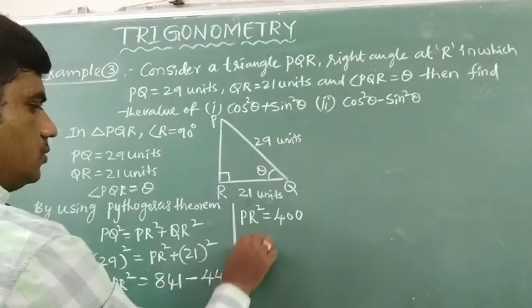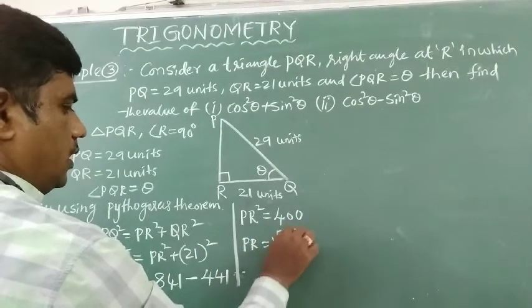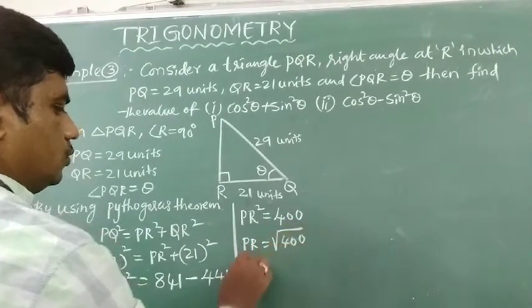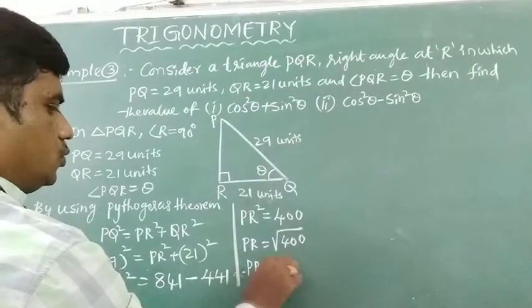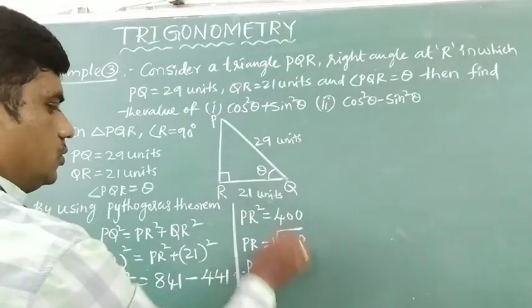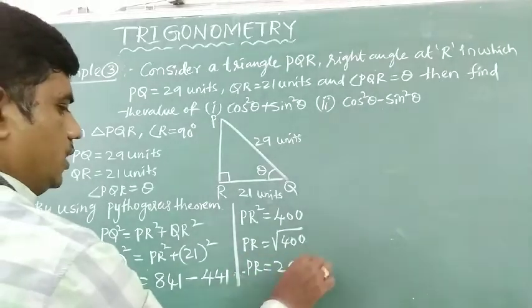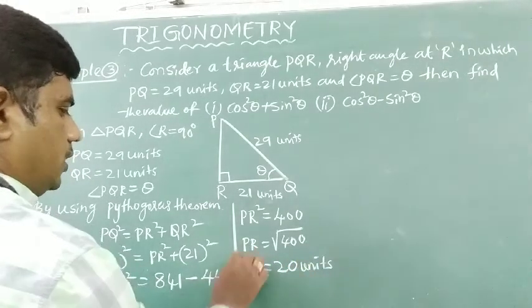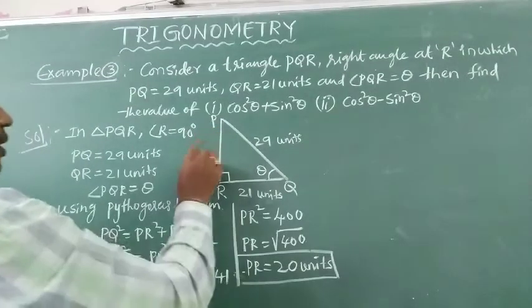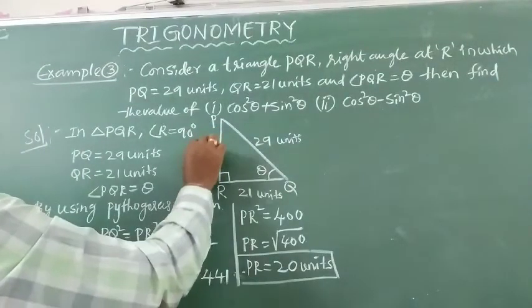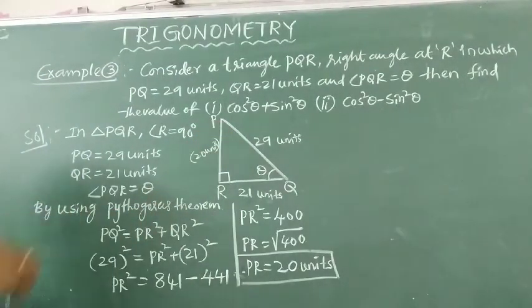Then PR equals the square root of 400. The square root of 4 is 2, and the square root of 20 is 10, so PR length is 20 units.